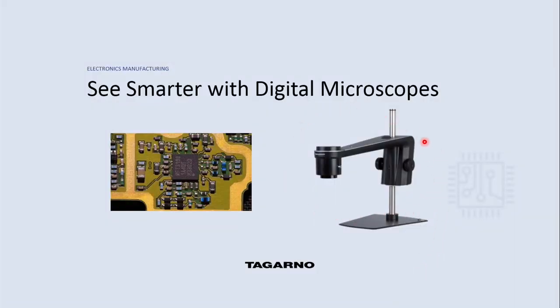Here is a typical digital microscope — obviously a stand, a boom, and the camera out here on the end. They're very simple to use; you place the board underneath and the image appears on a standard monitor. Of course you see no eyepieces, so this is a completely digital system.